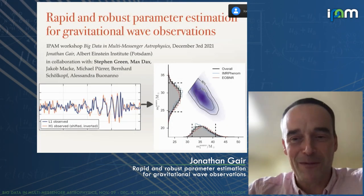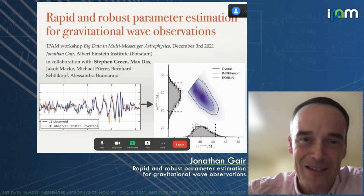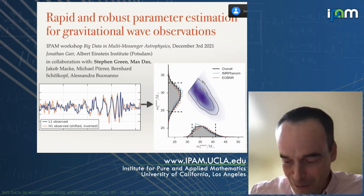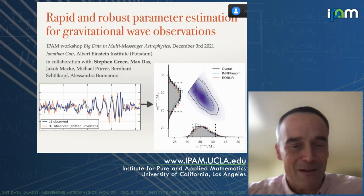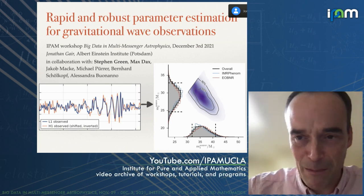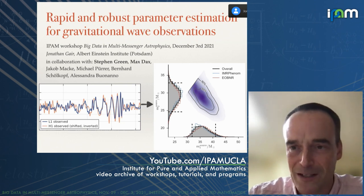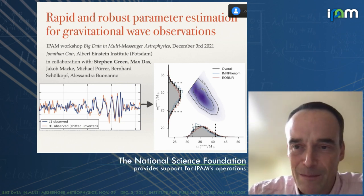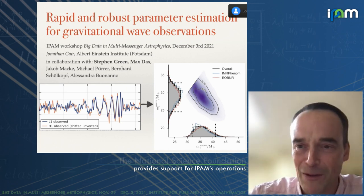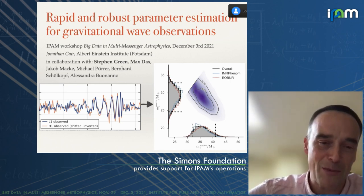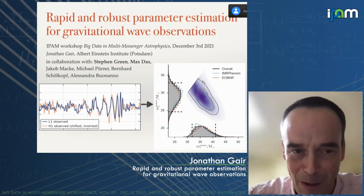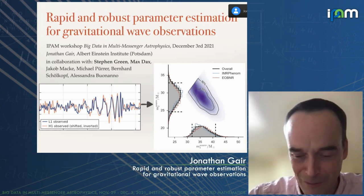I'll be talking about work we've developed over the past few years to do rapid parameter estimation while maintaining accuracy. There have been a number of collaborators involved, but the two most important people are Stephen Green, who's a postdoc at the AEI, and Max Dax, who's a PhD student at the Max Planck Institute for Intelligent Systems in Tübingen. Stephen came to the last workshop in this IPAM series, so those of you who were at that workshop will have heard some of this before, and I've tried to put a few different things in my talk.